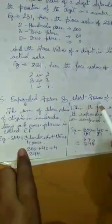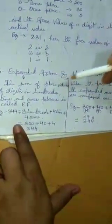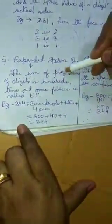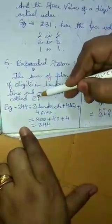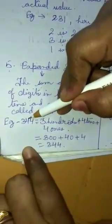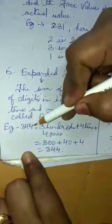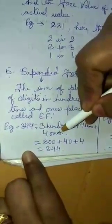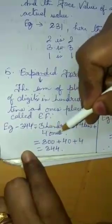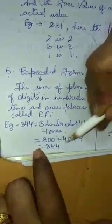Then we have another topic, expanded form and the short form of numbers. Expanded form: the sum of place values of digits in hundreds, tens and ones places is called expanded form. For example, 344. This 3 hundreds plus 4 tens plus 4 ones equals 300 plus 40 plus 4 equals 344.